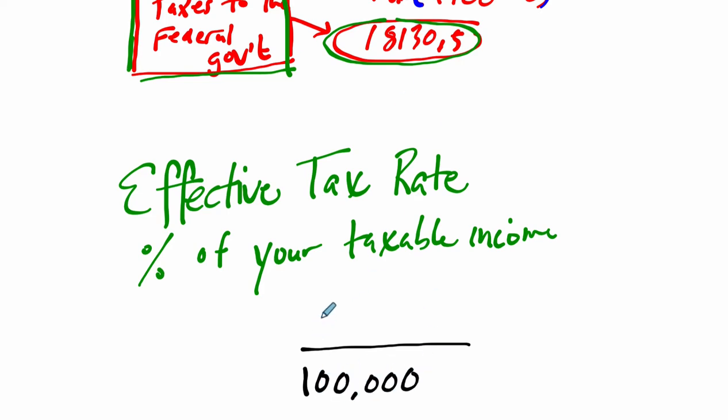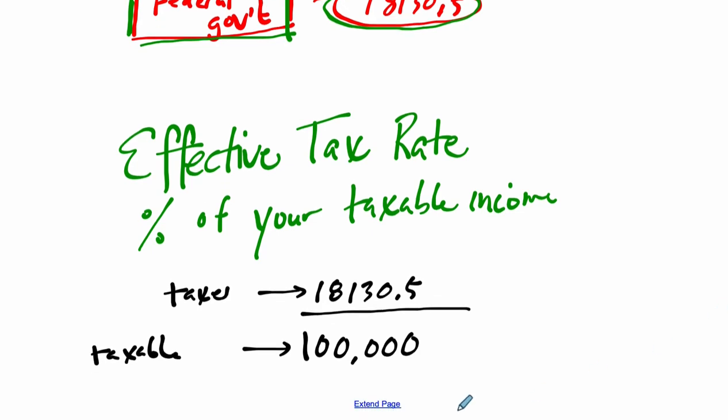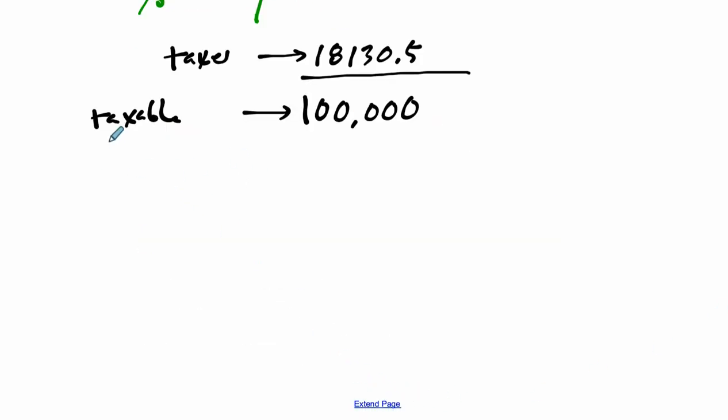So your $100,000 is your taxable income, and you end up paying $18,130.50. This is the taxes I'm paying up here, and right here is my taxable income. I divide these two. Since I want to write it as a percent, the quotient of these two, if I multiply it by 100, I'll get a working percent.